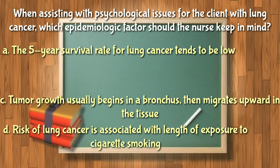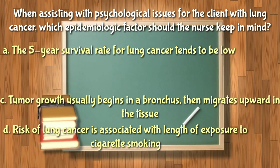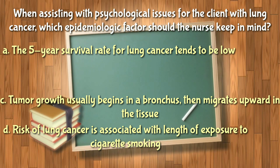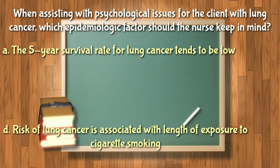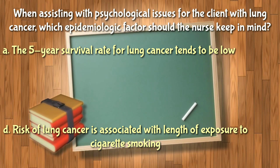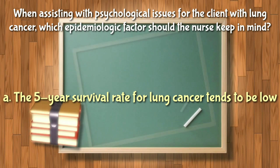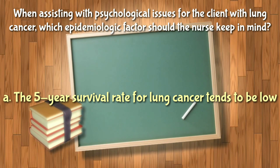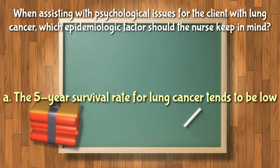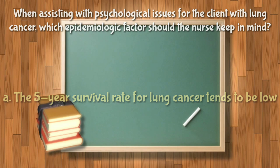Tumor growth does not typically begin in a bronchus and progress upward, and this information has no relation to the client's psychological adaptation — letter C is wrong. Lung cancer is not caused by cigarette smoking infection alone; it is usually associated with multiple causes. The answer is letter A: the nurse should help the client and family approach the diagnosis from a realistic perspective, as five-year survival rates tend to be low because symptoms can be ignored or attributed to other causes early in the disease.